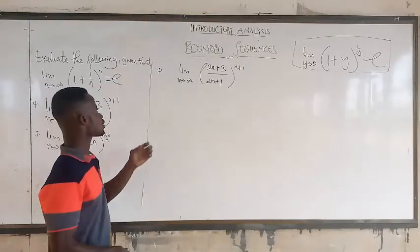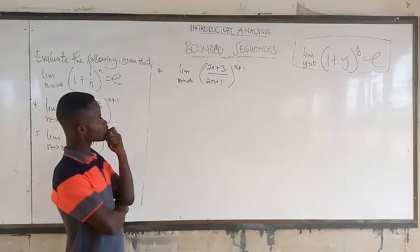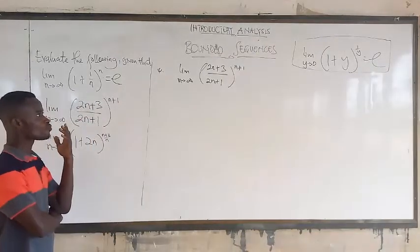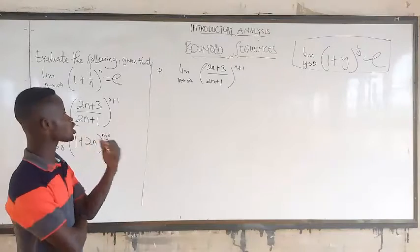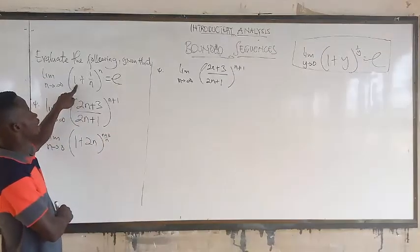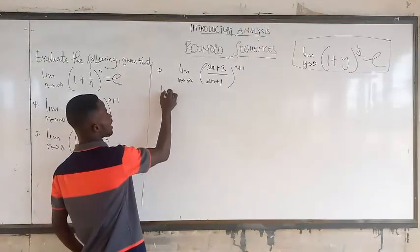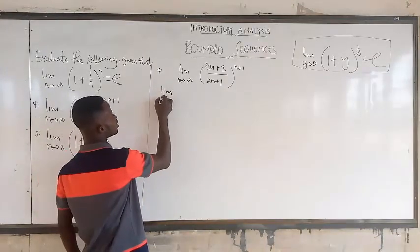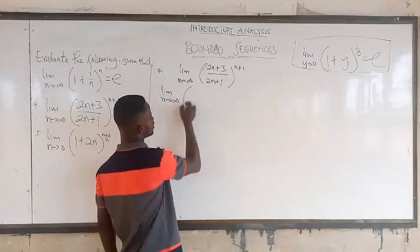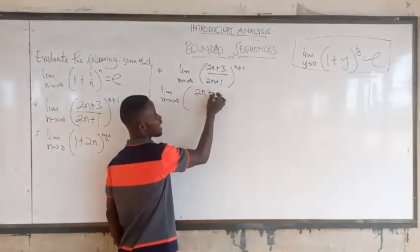Okay, so now looking at the fourth question, if you want to solve this, don't forget that always from question one that we have been solving, we always want to achieve the '1 plus' form here. So here, to achieve that '1 plus', you know that the numerator here is the same as 2n plus something.